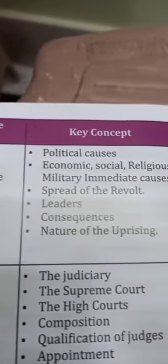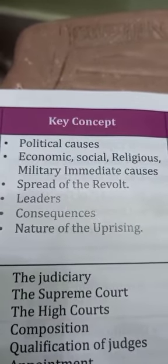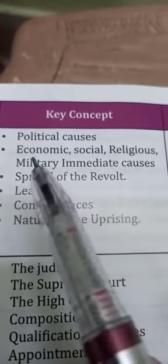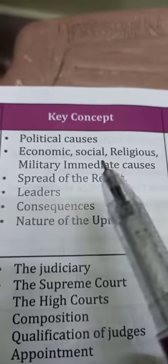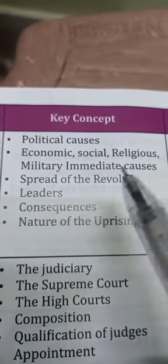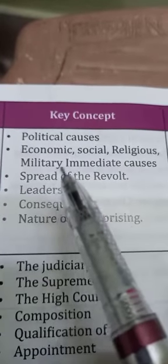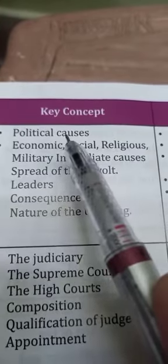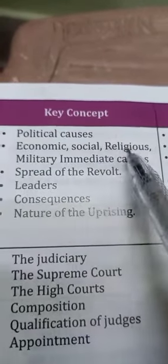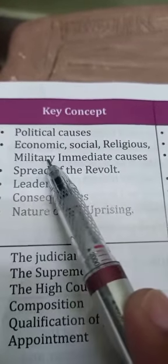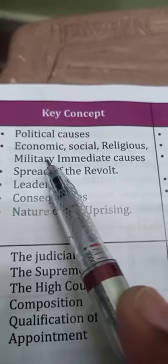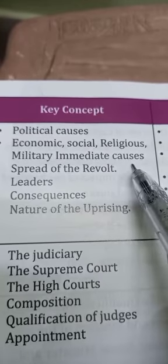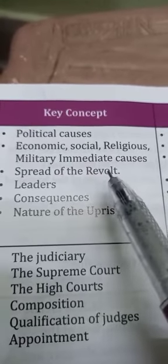The key concepts we have in the chapter are political causes, economic causes, social causes, religious causes, military causes, and immediate causes. It is because of all these causes that the revolt got spread in some of the places. And there was an immediate cause which brought fire to the revolt.